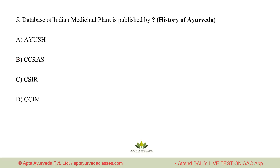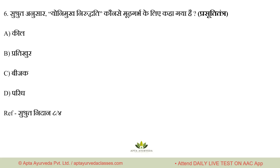Question number 5: Database of Indian Medicinal Plants is published by whom? This is from History of Ayurveda / Ayush GK. Options: A. AYUSH, B. CCRS, C. CSIR, D. CCIM. The right answer is CCRS — they published this database. Note this — it can come as an Ayush GK question.